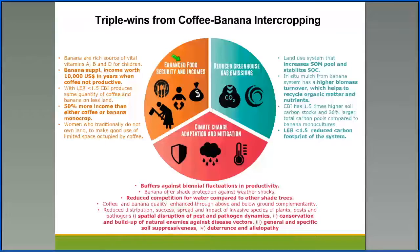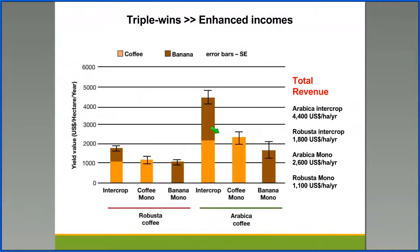This is an overview of the triple wins that farmers can gain from intercropping coffee with bananas. One of them is the enhanced food security and incomes. We have the reduced greenhouse gas emissions and climate change adaptation and mitigation.